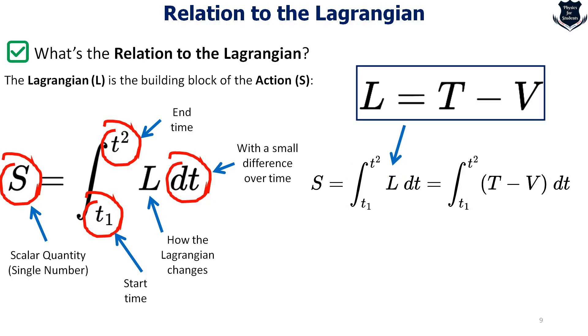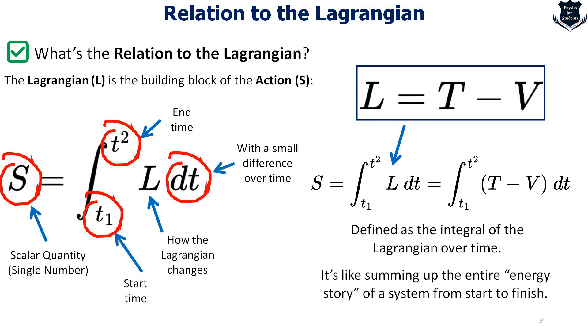If we take the Lagrangian L equals T minus V and then we just plug in the L over this equation, here we see the definition of action. It is the integral of the total sum of the Lagrangian which is simply kinetic minus potential energy. We calculate this from the initial time T1 to the final time T2, and this quantity called action helps us to determine the actual path the system will follow. This actually connects all the three: the action, the action principle and what it relates to the Lagrangian.